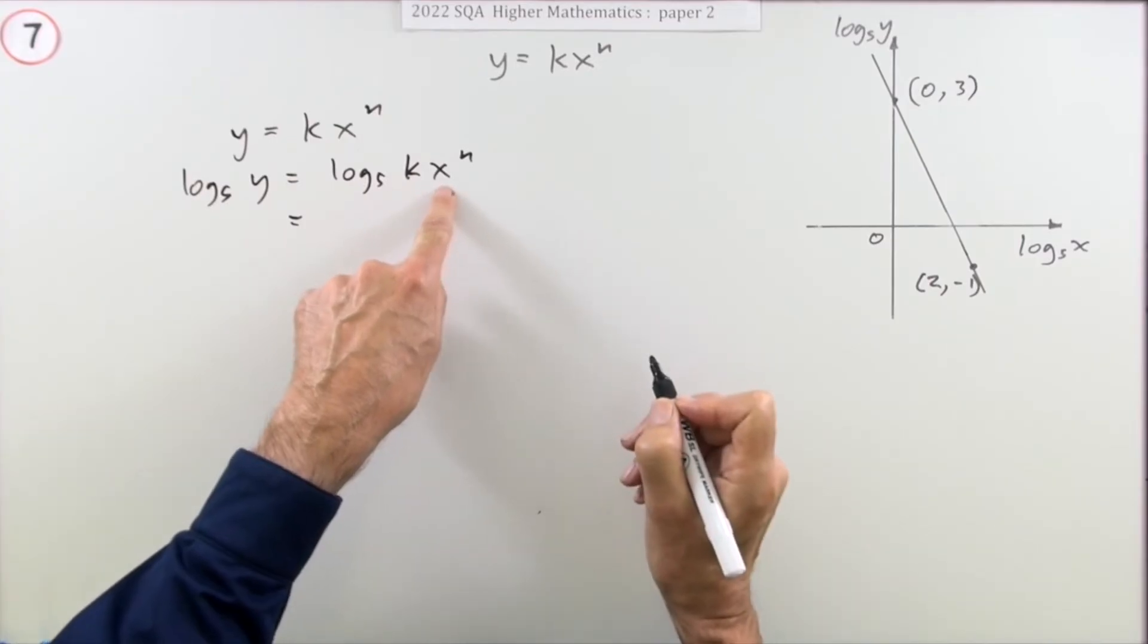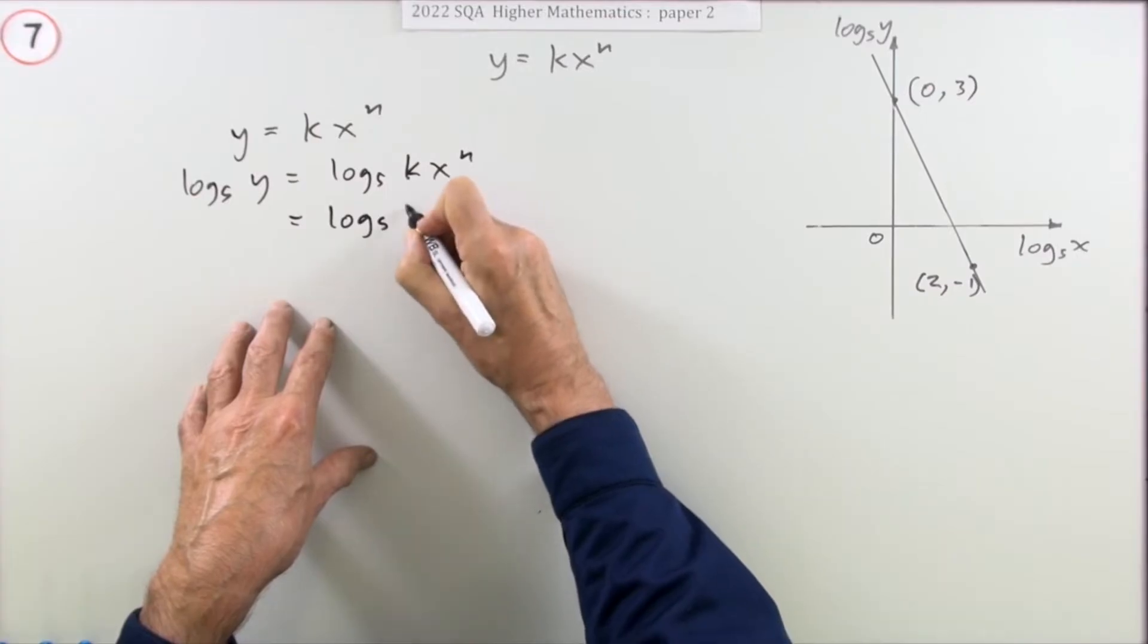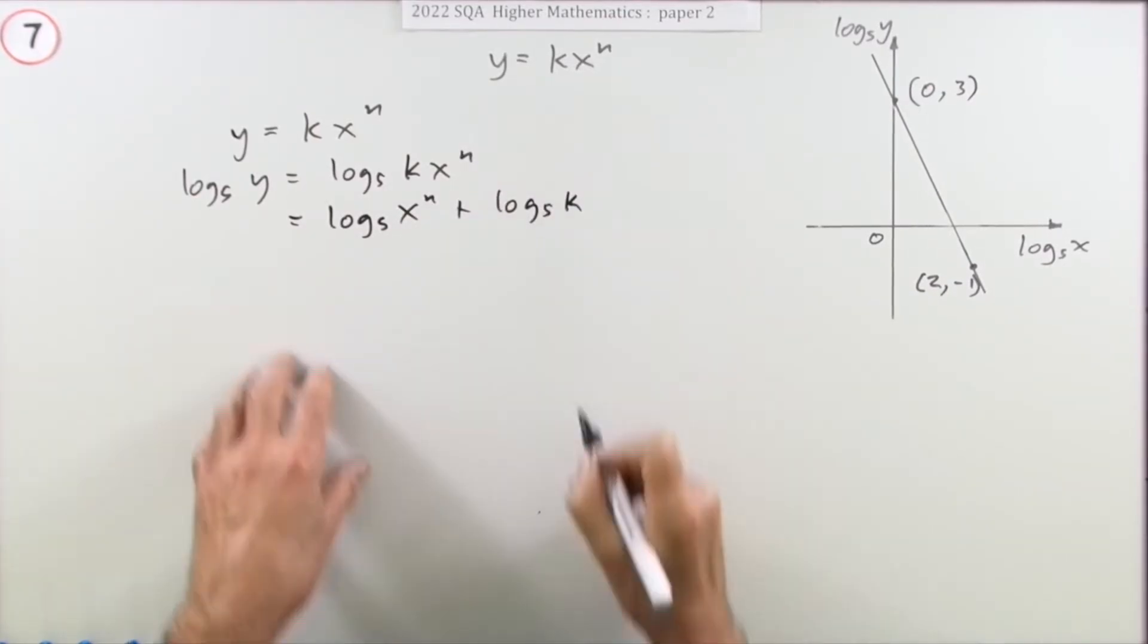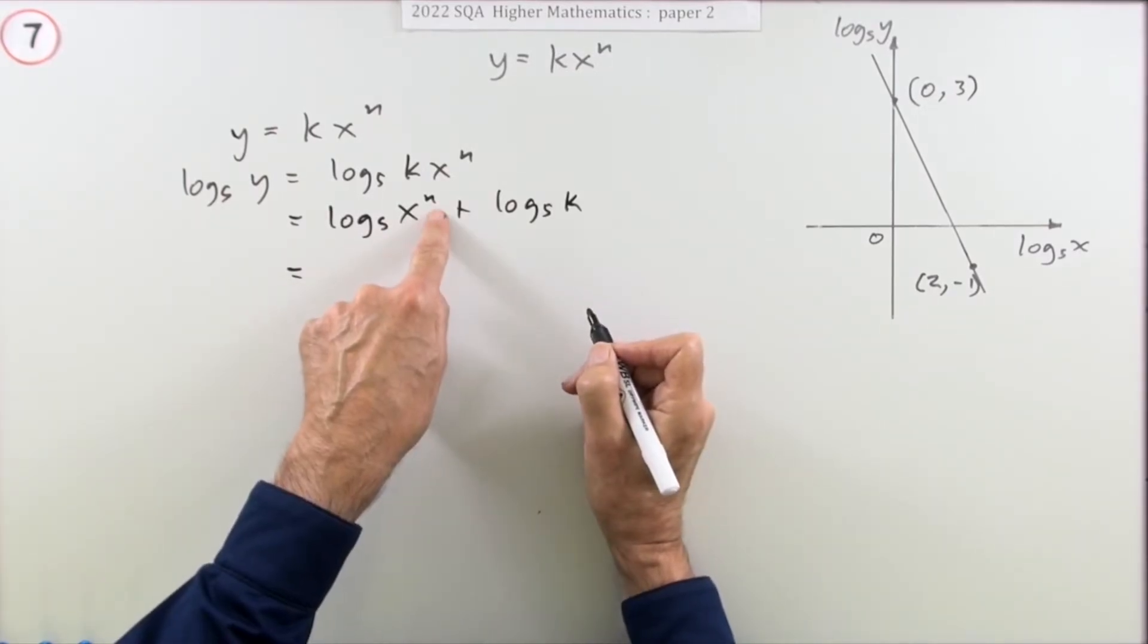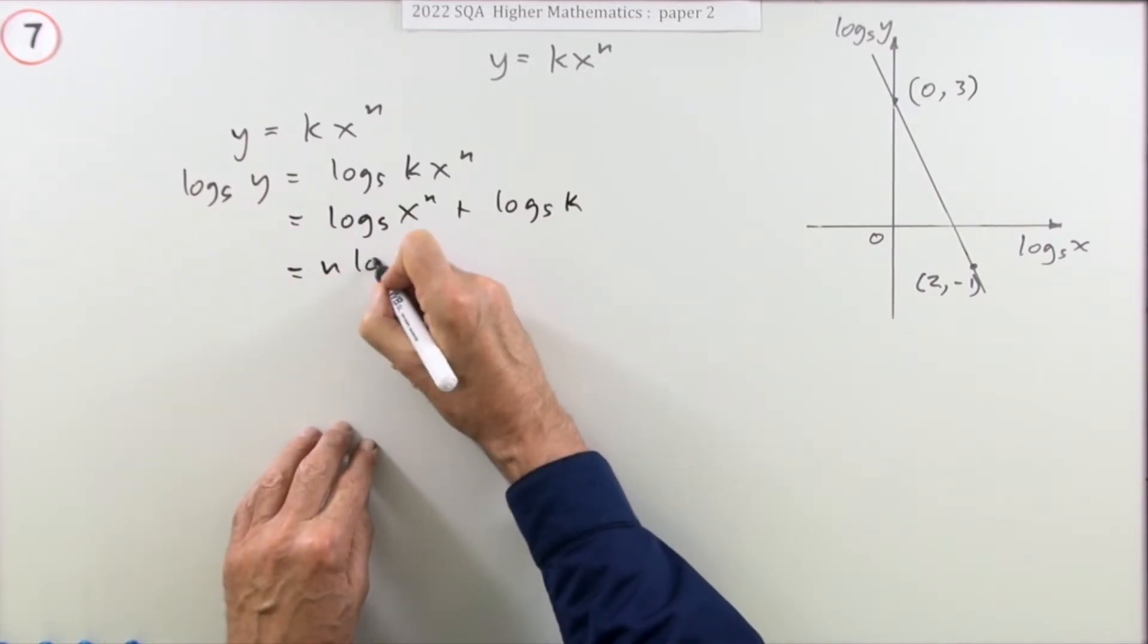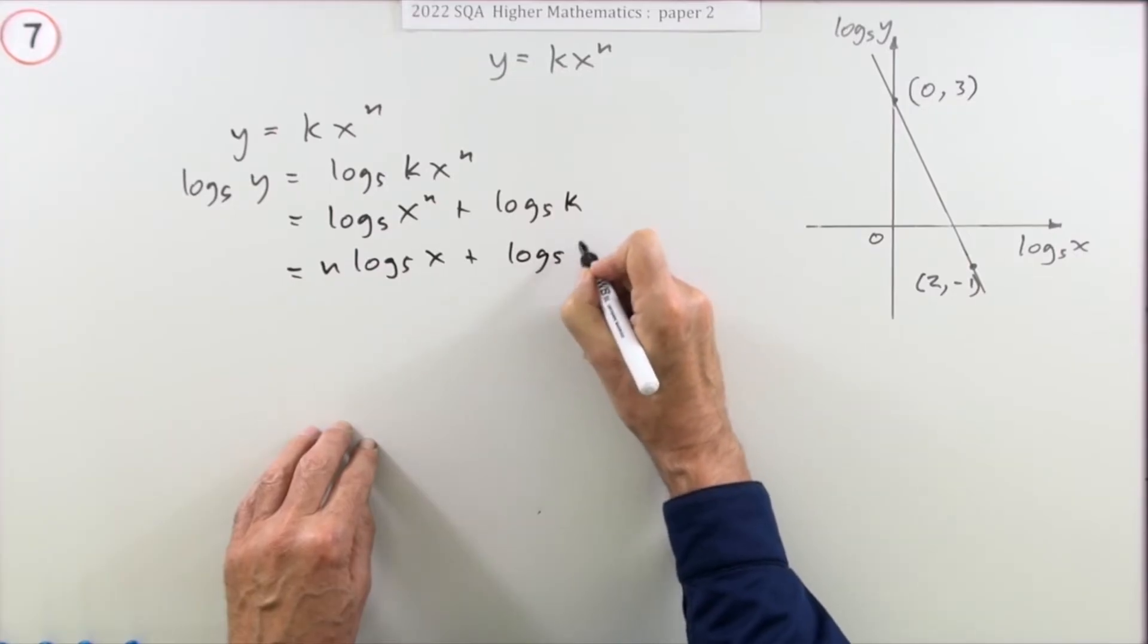So this will split up. There's a product, it's split into two parts. I think I'll write that other one first, though. So that would be log base 5 of x to the n, and log base 5 of k. Now that can split again. You've got the rules here of logs, if you've got a power that can pop out to the front. So that's n log 5 of x plus log 5 of k.